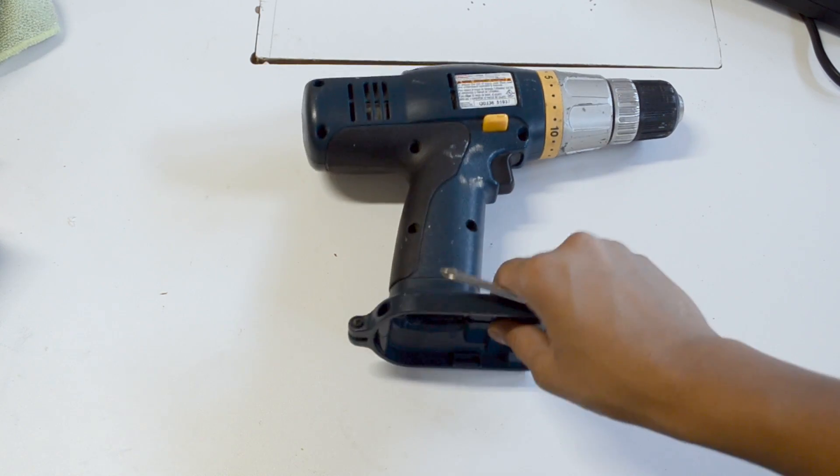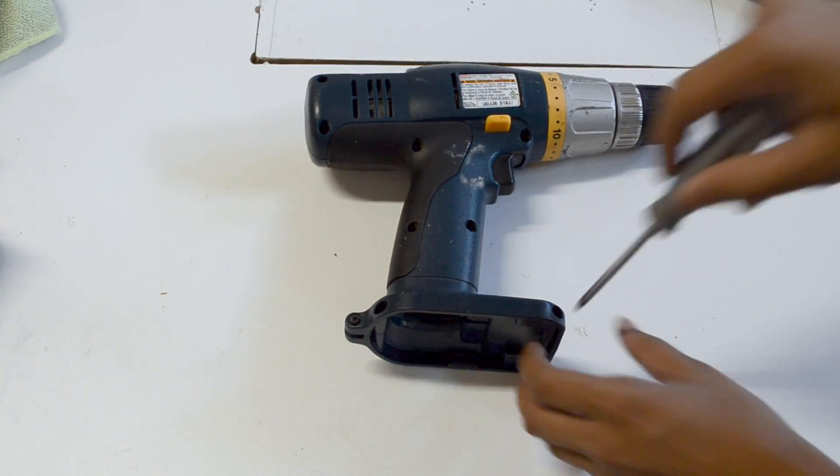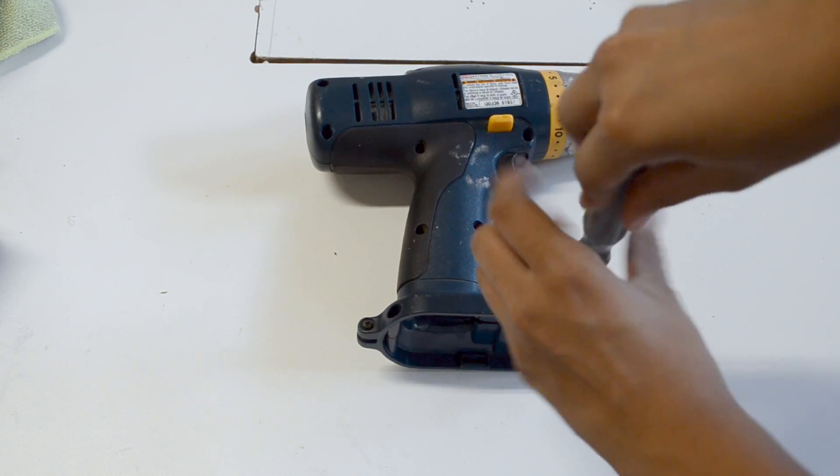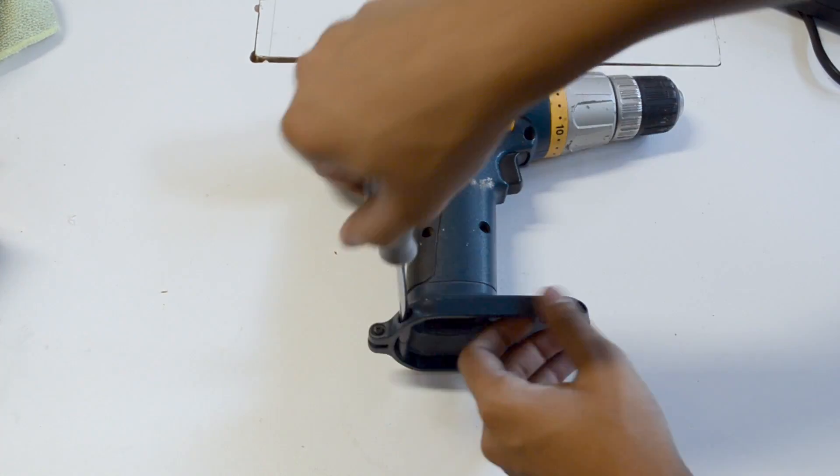The first step is to unscrew all the screws holding the drill together. It's important however to keep track of where the screws go because some of them could be different sizes.